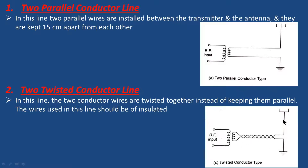The two wires are twisted together in this line. That is the two twisted conductor line.